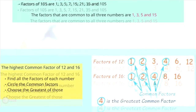In exercise 3 you can see the method for finding HCF. First step: find all the factors of each number. Then circle the common factors. In step 3, choose the greatest of those. In this situation you can say that 4 is the HCF of 12 and 16.